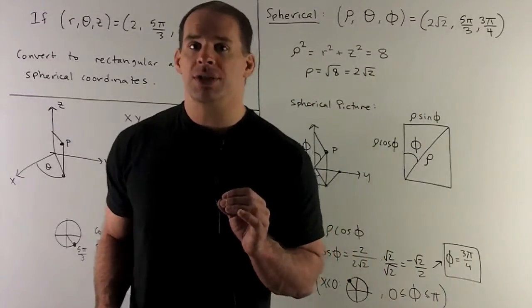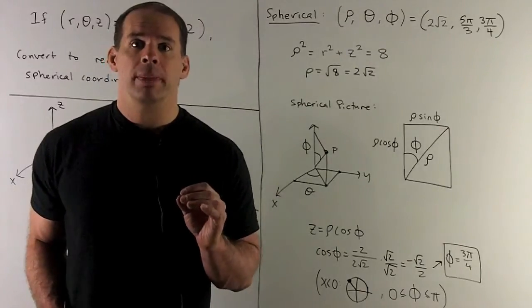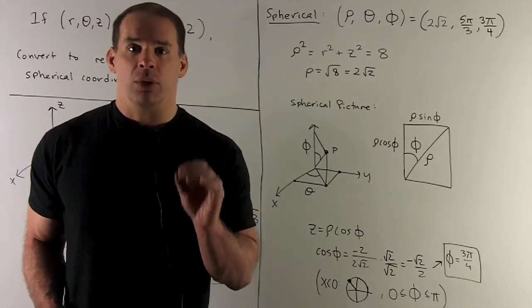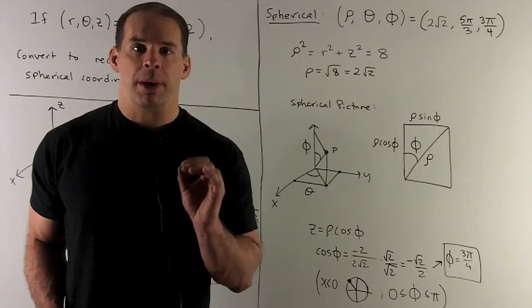For spherical coordinates, we're looking for rho, theta, and phi. We're given theta for free. That's 5 pi thirds.